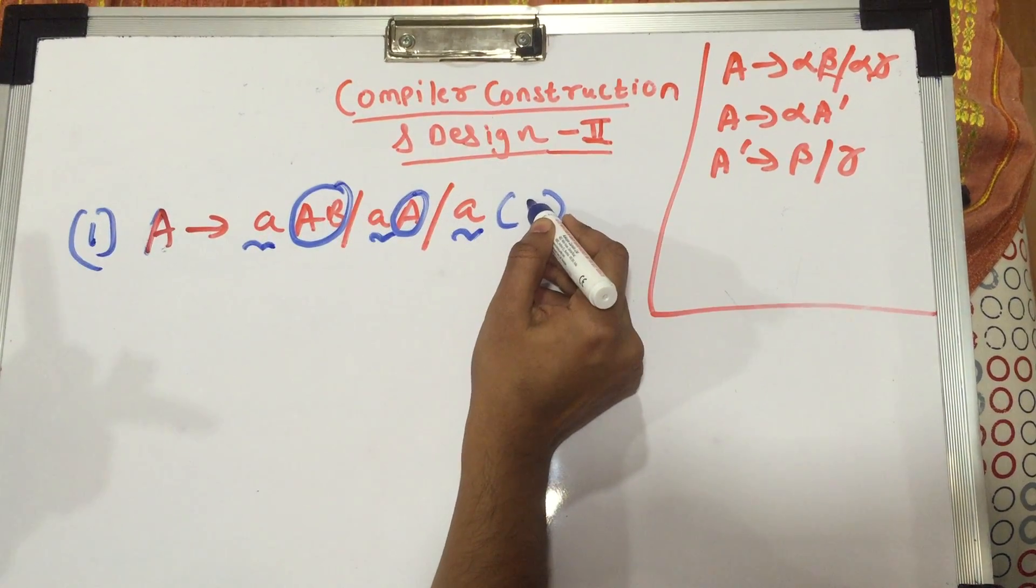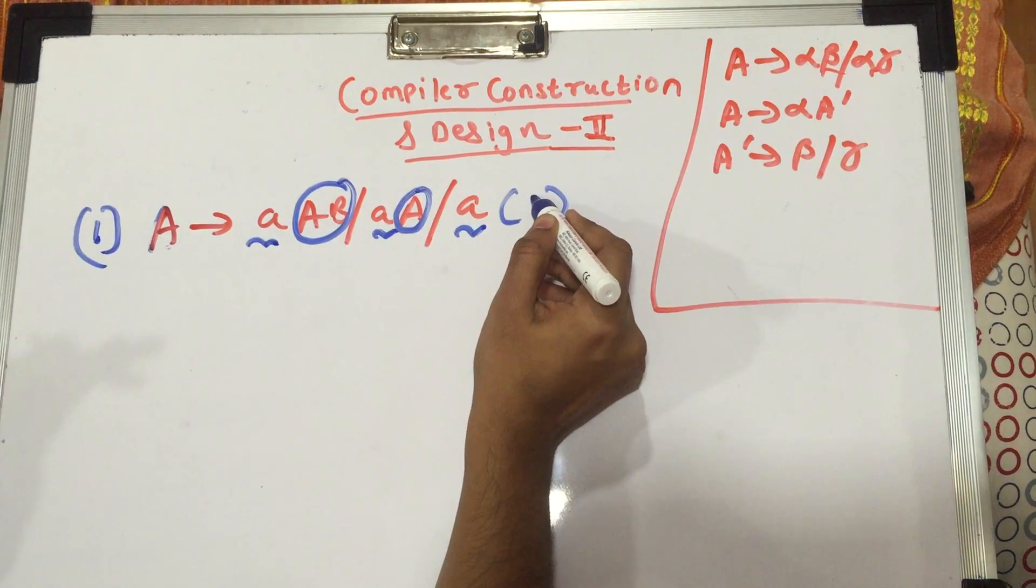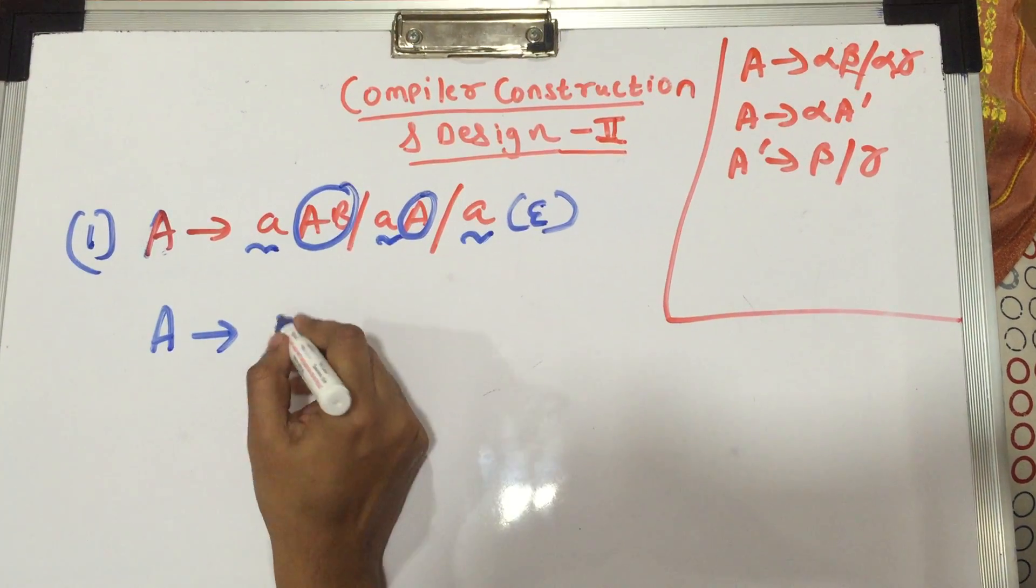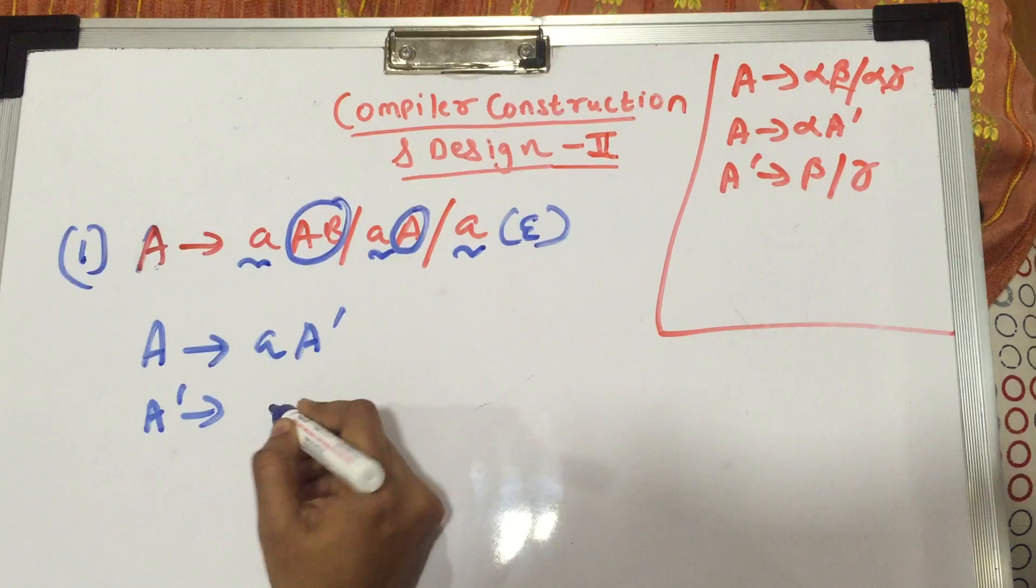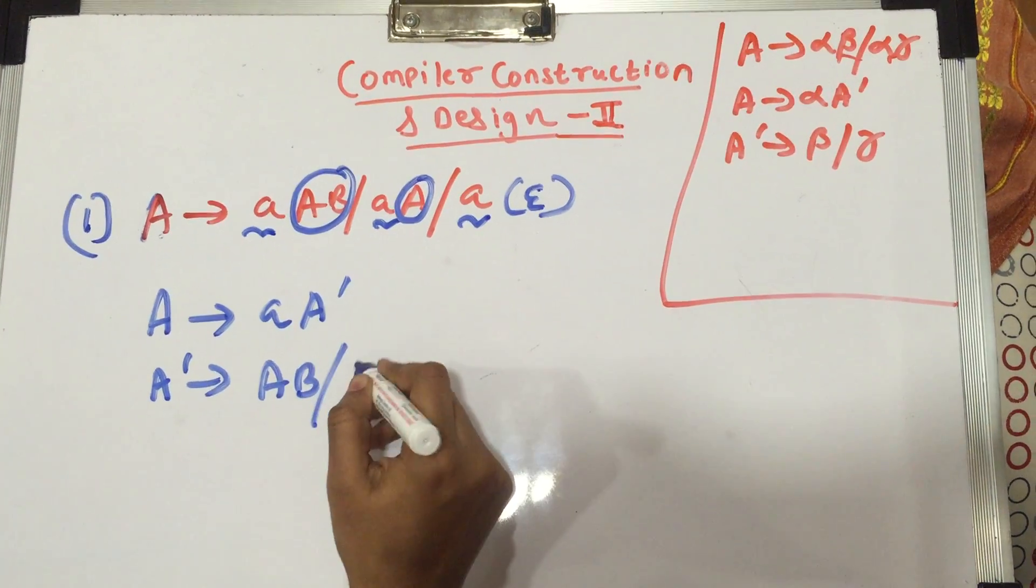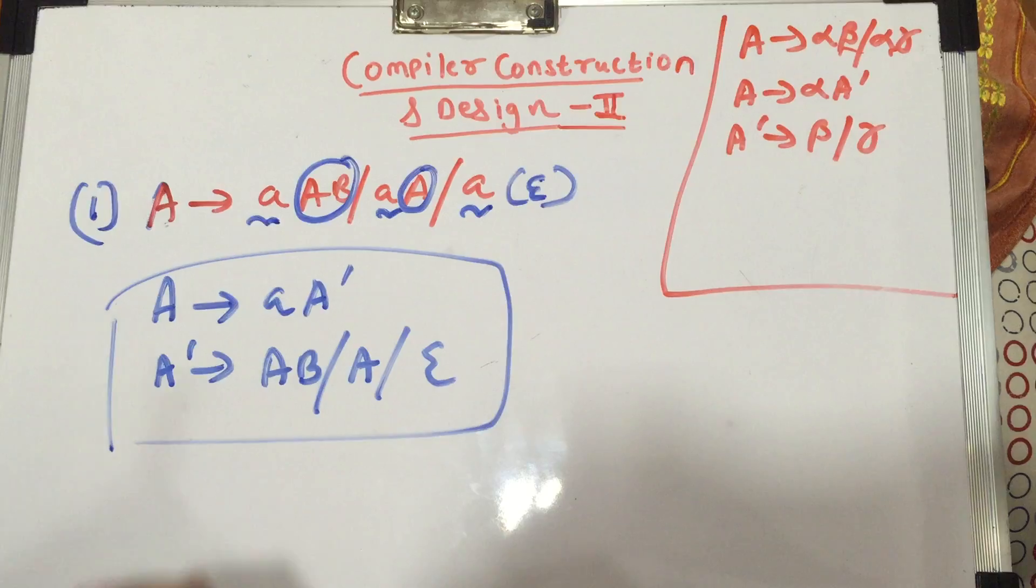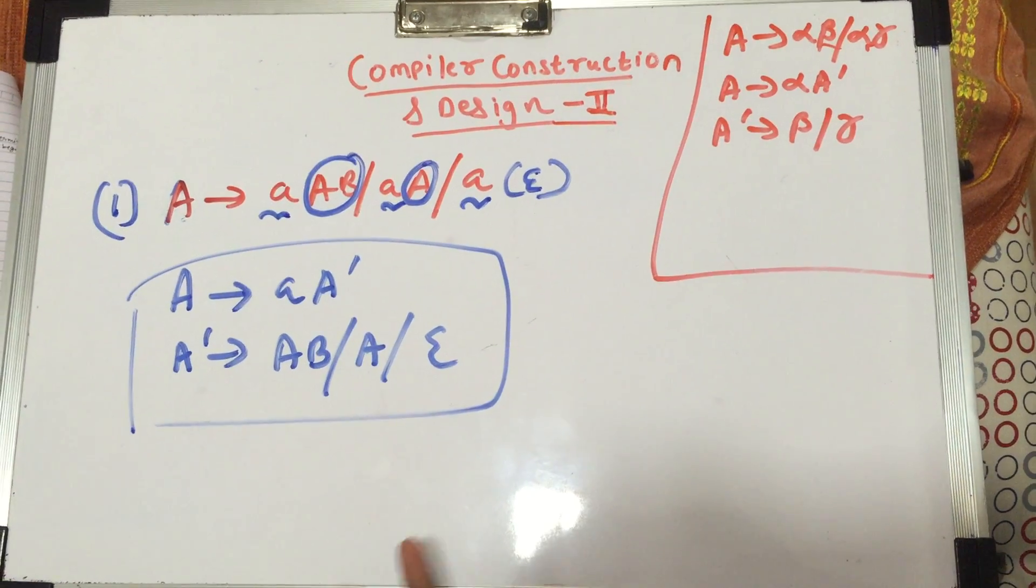If there is nothing here to take common, after taking common if nothing is left you put in an epsilon. So basically the answer in this would be A gives you a A dash, and A dash gives you aB, A, and epsilon.